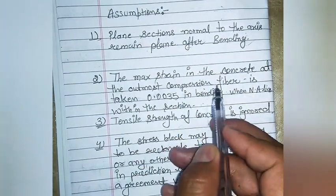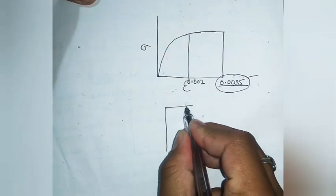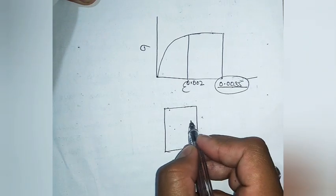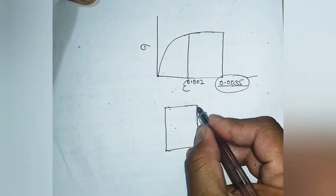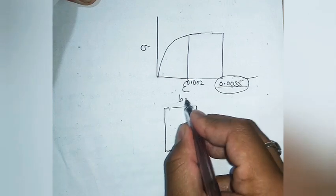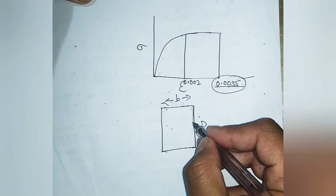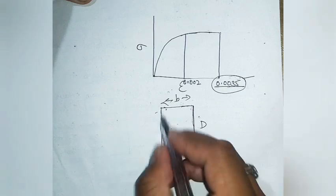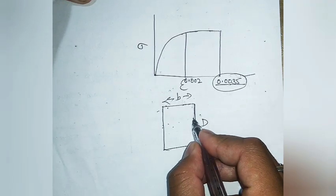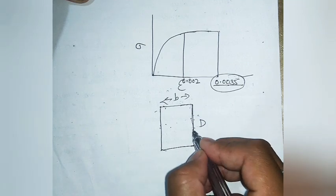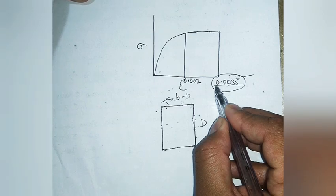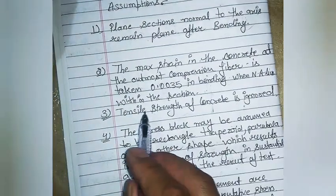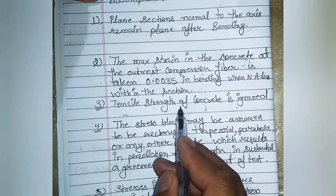The outermost compression fiber is the extreme face of the column section. If the neutral axis lies inside or at the edge of this column, the maximum strain at the outermost compression fiber is 0.0035. The third assumption is that the tensile strength of concrete is ignored. The stress block may be assumed to be rectangular, trapezoidal, parabolic, or any other shape giving strength in substantial agreement with test results.